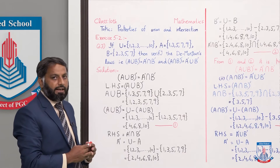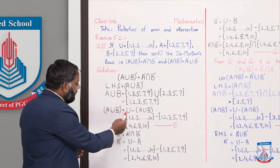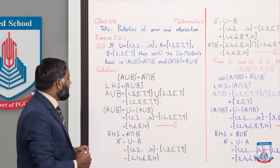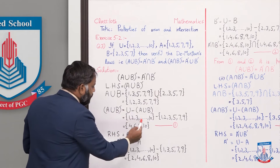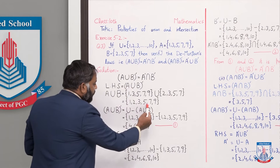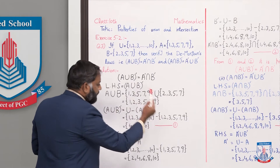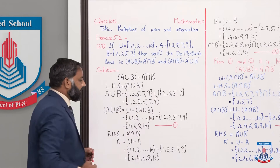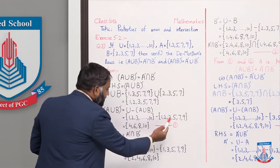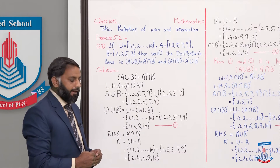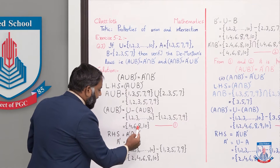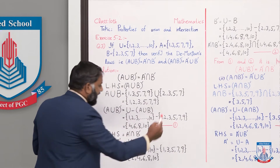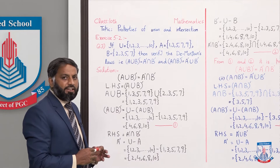Now we need to find the complement of A∪B. So (A∪B)' = U minus A∪B. The universal set is the first ten natural numbers: {1, 2, 3, ..., 10}. We subtract the value of A∪B we found. Since it is the difference of two sets, we write the elements of the first set that are not in the second set. So the result is {4, 6, 8, 10}.